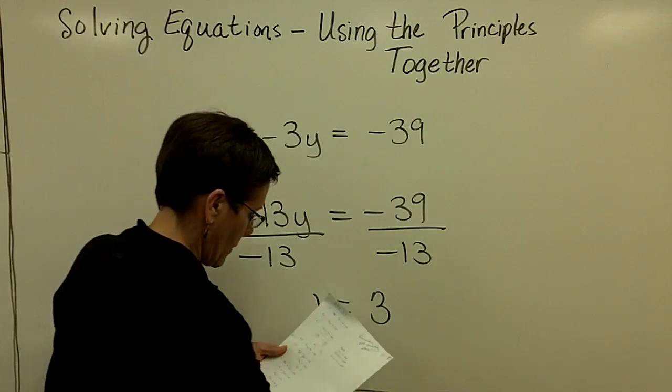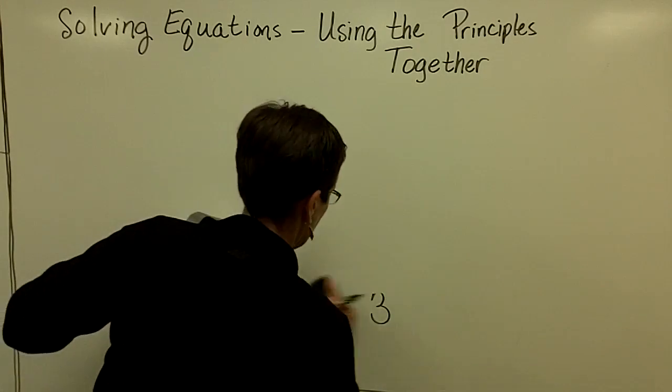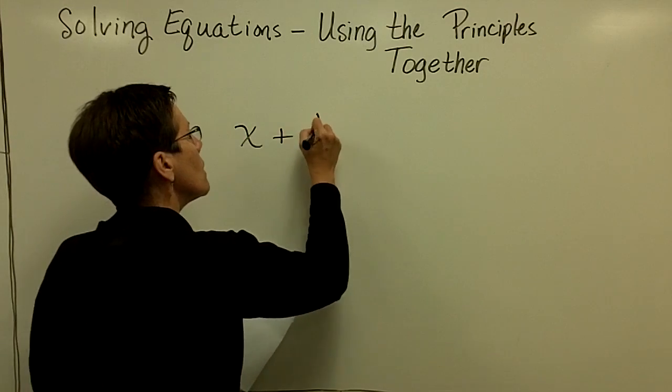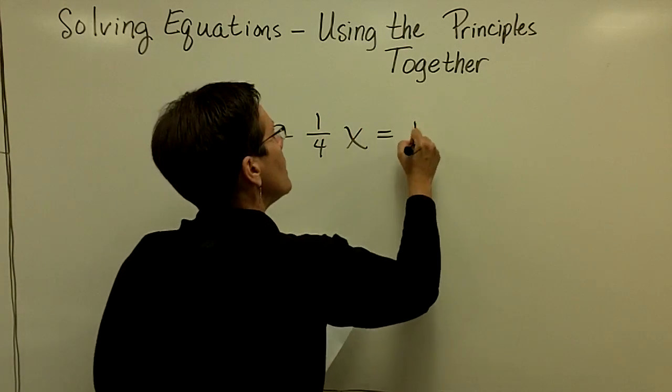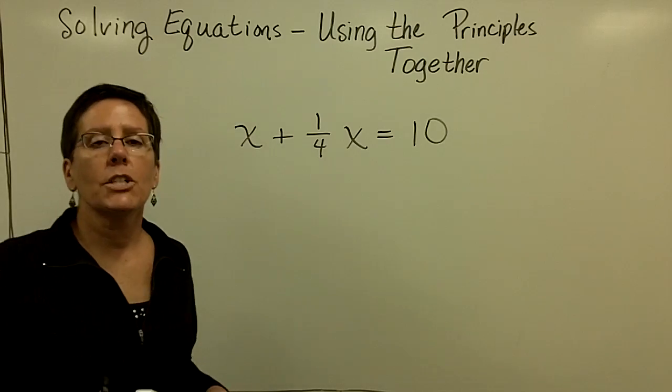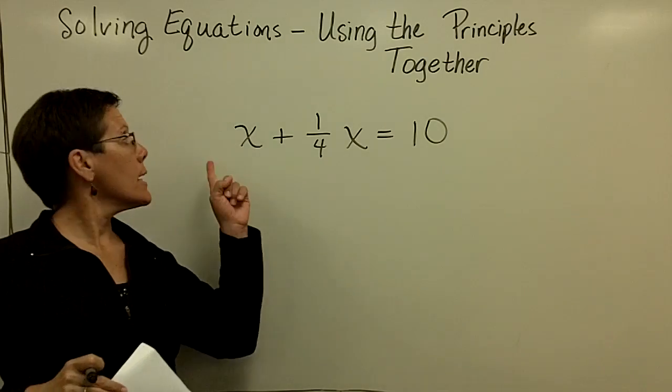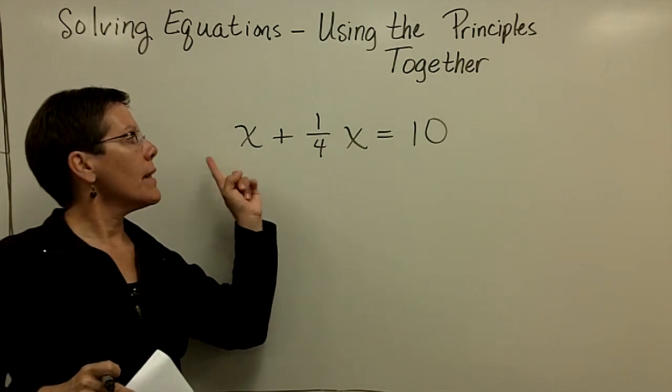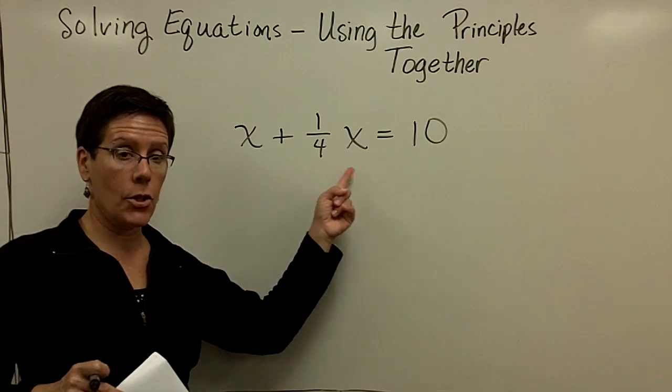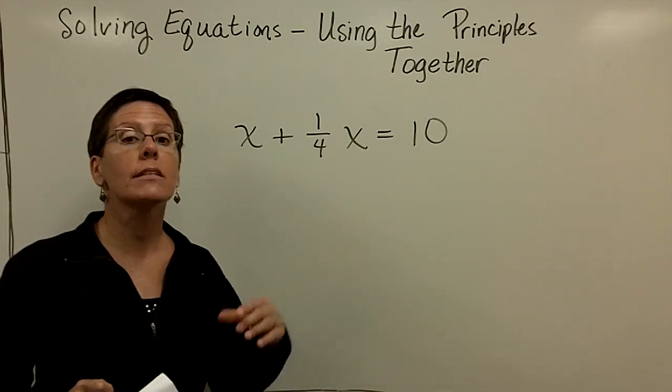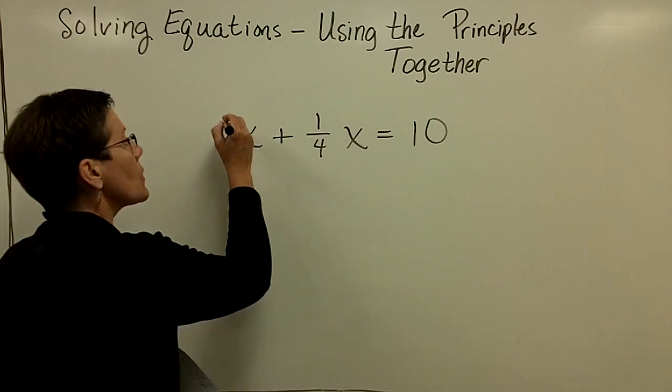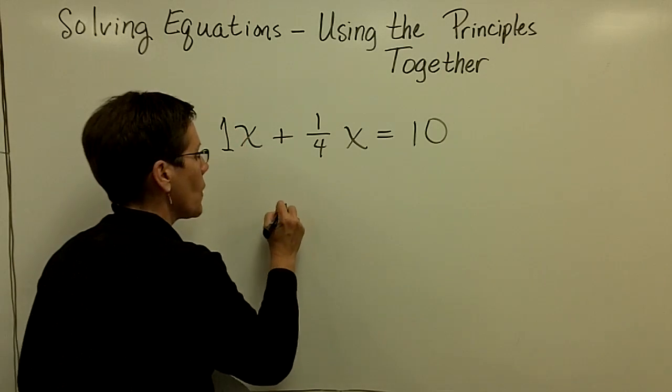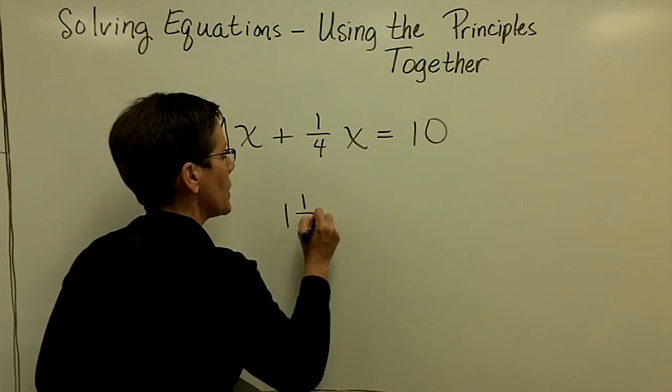Let's see, we can do one more problem. I put this one here because I wanted you to see the 1 in front of the x. We don't write it, but it's there. And these two are like terms because they both contain the variable x, and so I have to add their coefficients. So this 1 plus that 1 quarter makes for 1 and 1 quarter x.